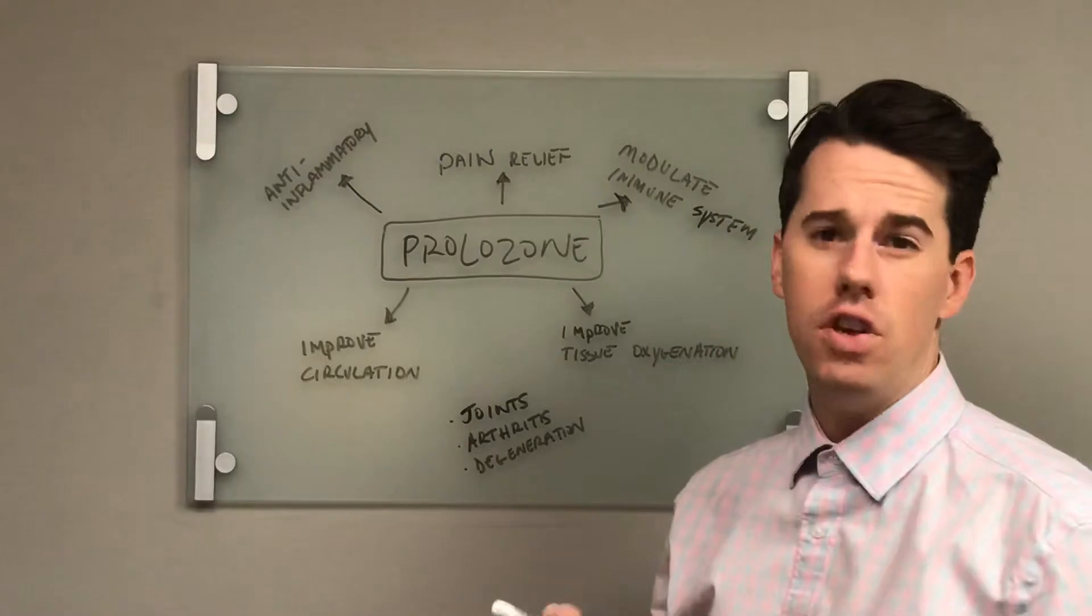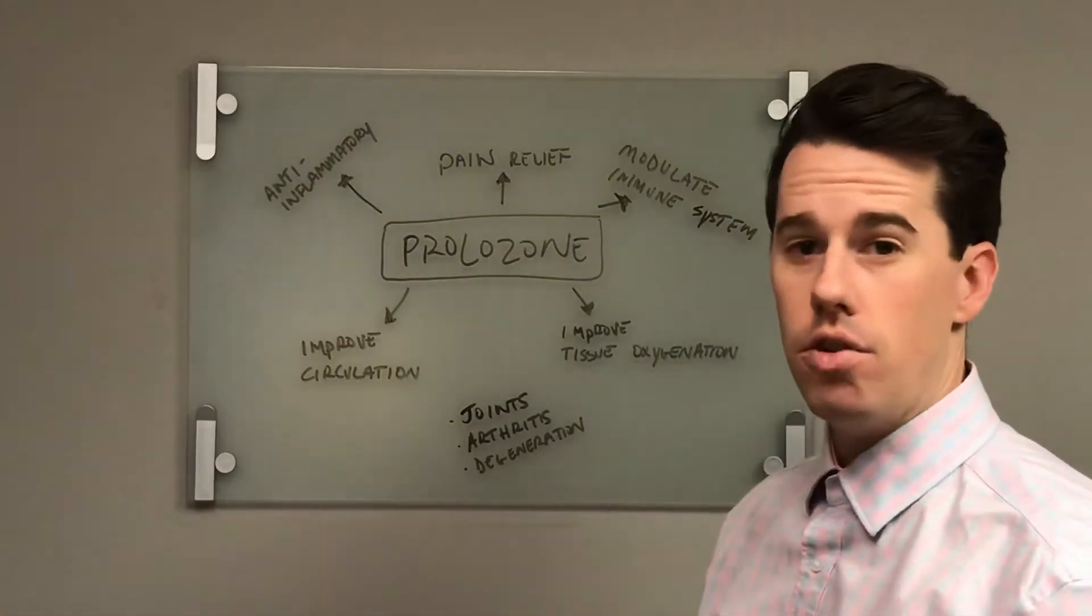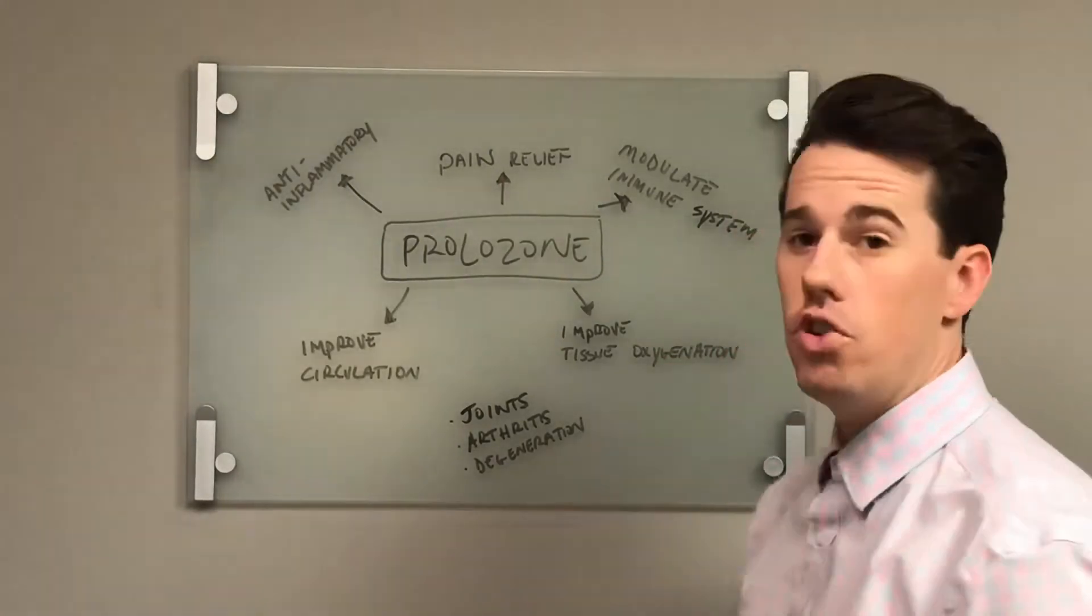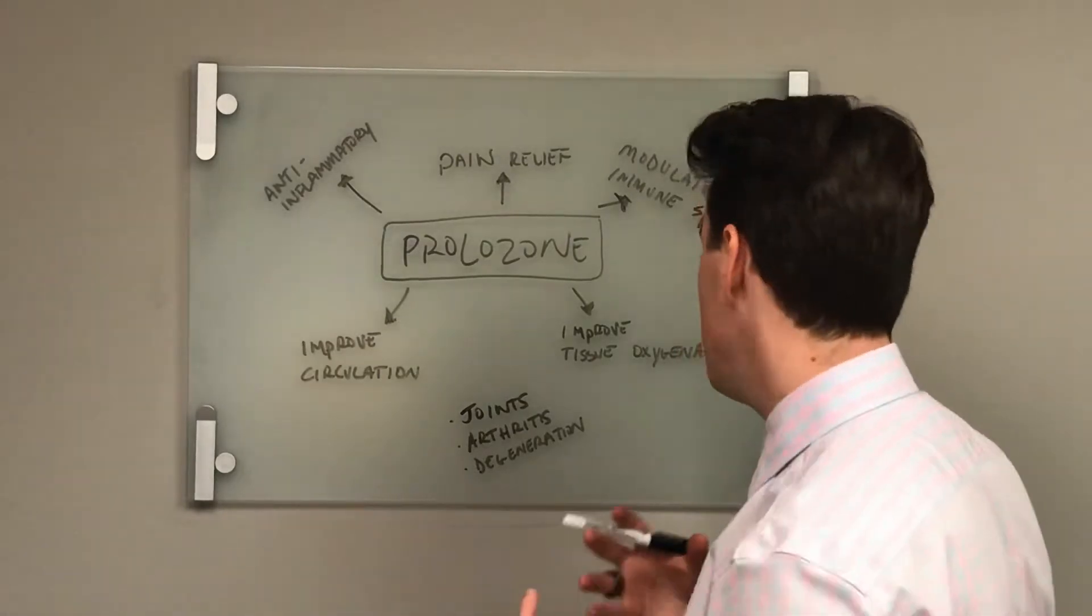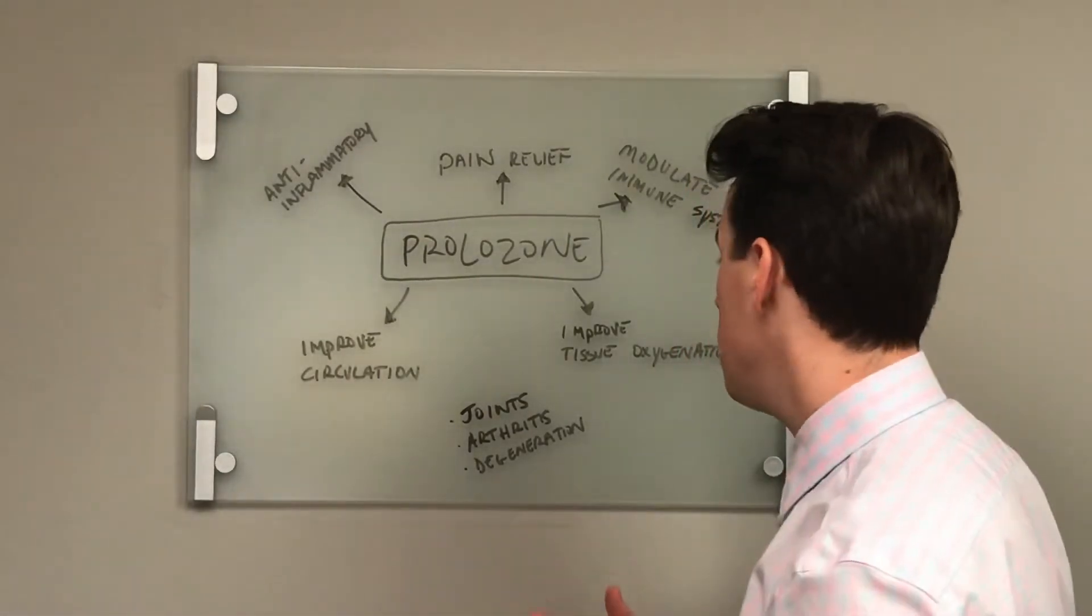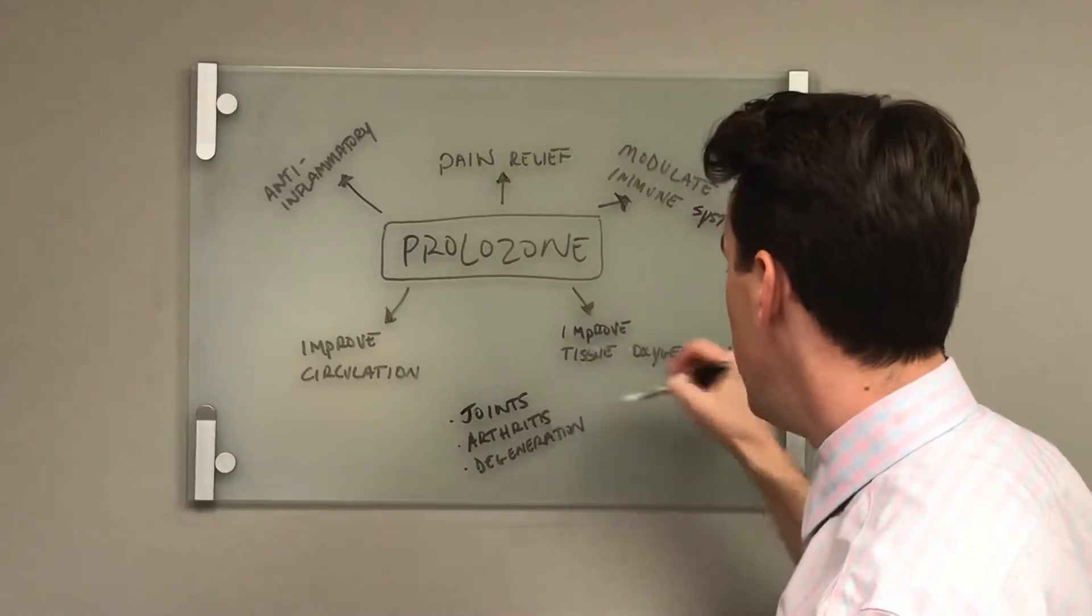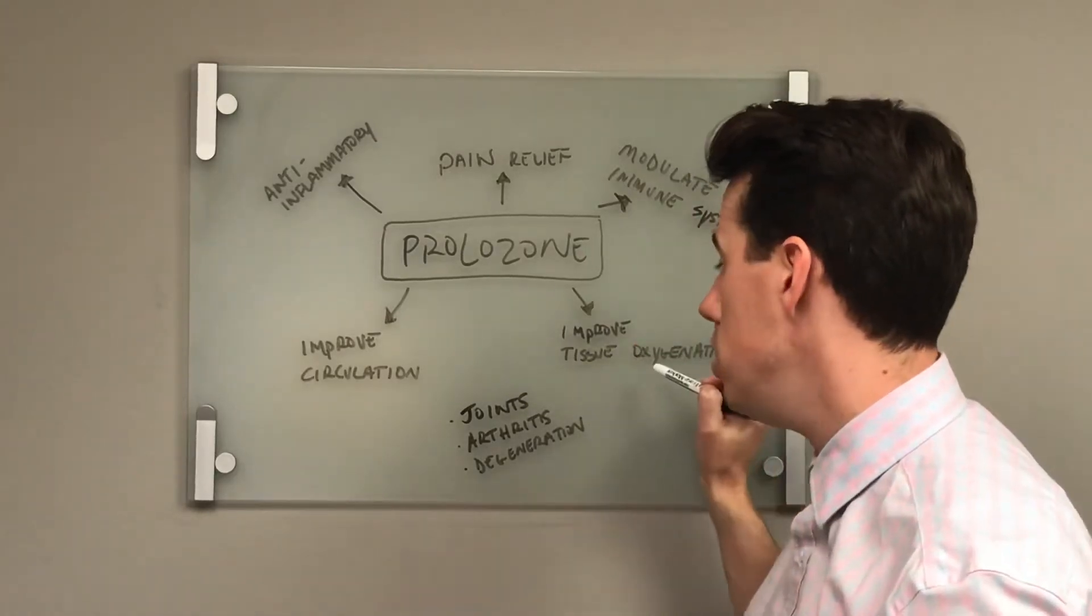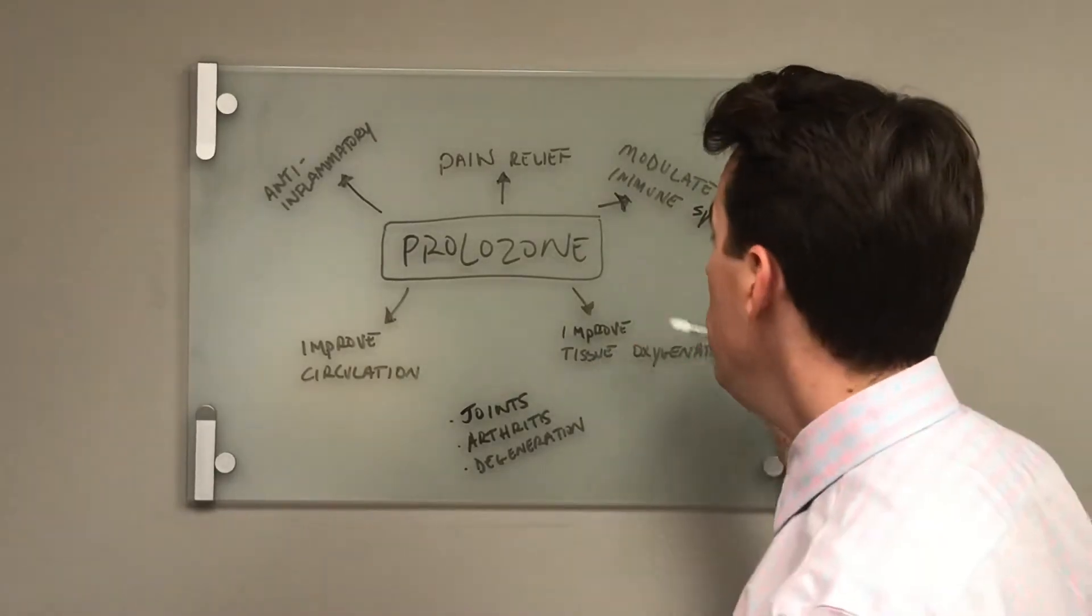So oxygen is essential for all of the cells in our body. Our body needs oxygen for cells to breathe, for cells to make energy, and for cells to heal and repair themselves. And what Prolozone does is it helps improve tissue oxygenation in areas that are injured.